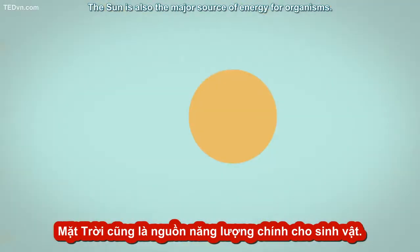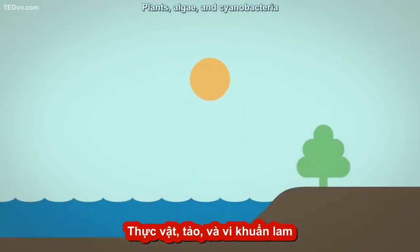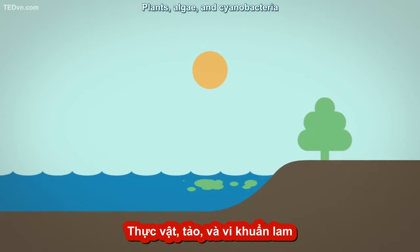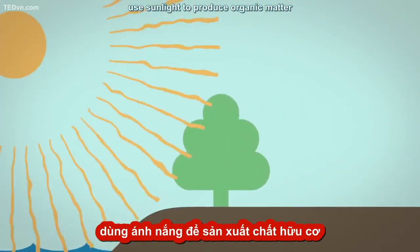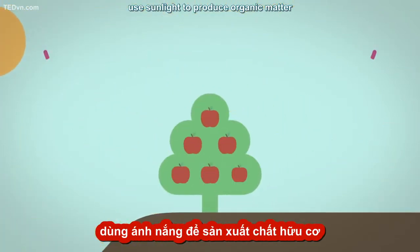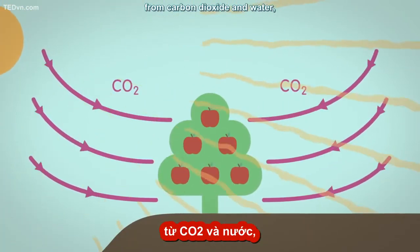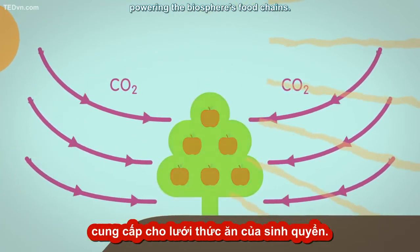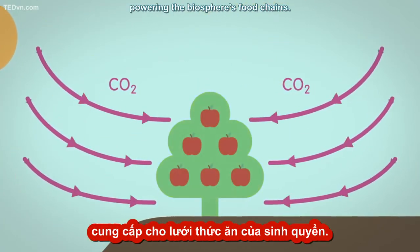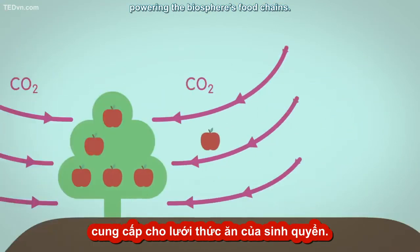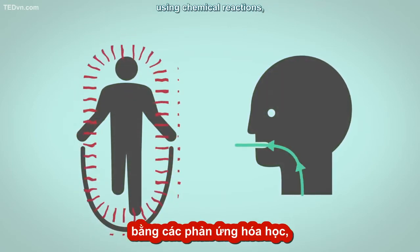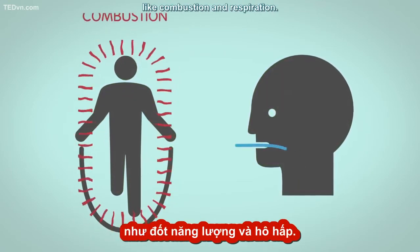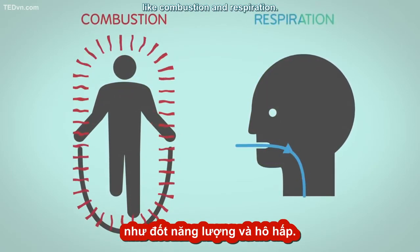The Sun is also the major source of energy for organisms. Plants, algae, and cyanobacteria use sunlight to produce organic matter from carbon dioxide and water, powering the biosphere's food chains. We release this food energy using chemical reactions, like combustion and respiration.